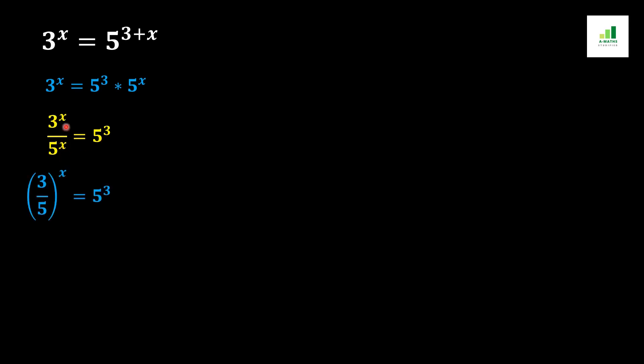Now in the next step we should rewrite this expression as 3 over 5 to the overall power x. From the basic rule of algebra, if two values have different bases and exist in division but the same power, then it can be written in this form. This expression can be written as 3 over 5 to the power x equals 5 to the power 3.